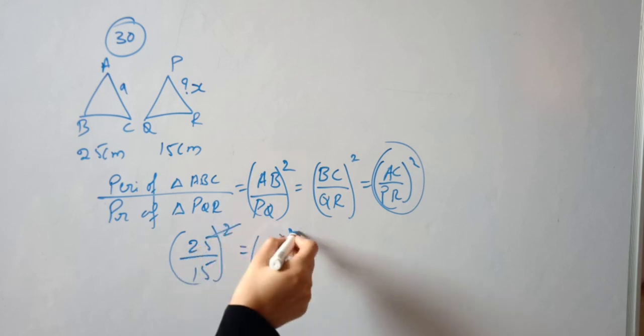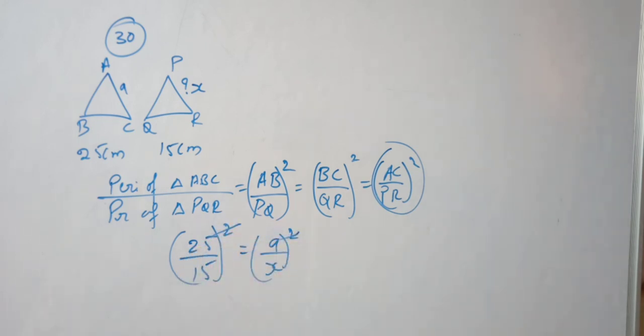Whole square is here, so square square gets cancelled. 5 times 3 is 15, 5 times 5 is 25, divide by 5. So 5 by 3 is equal to 9 by X.